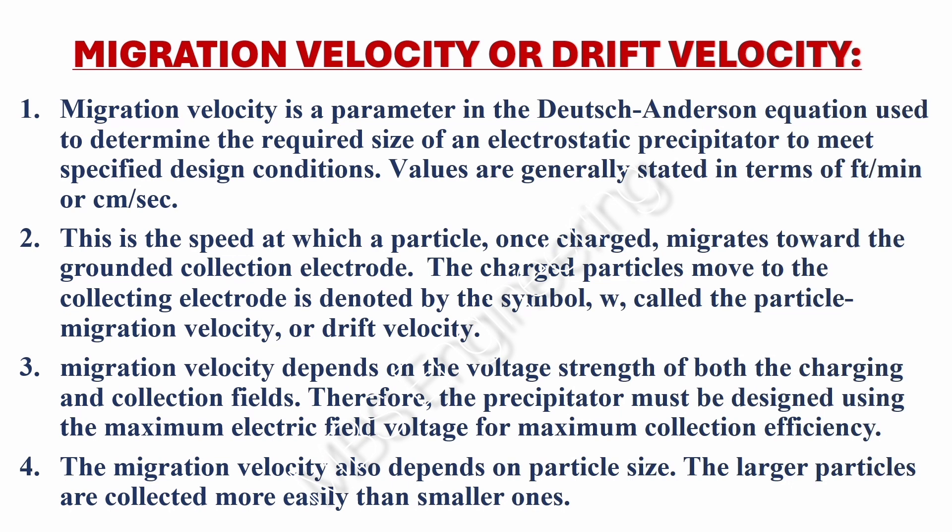Values are generally stated in terms of feet per minute or centimeters per second. Migration velocity is the speed at which a particle, once charged, migrates toward the grounded collecting electrode. The charged particles move to the collection electrode as denoted by the symbol omega, called the particle migration velocity or drift velocity.